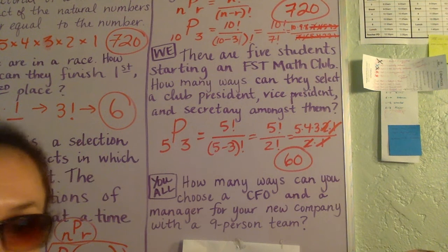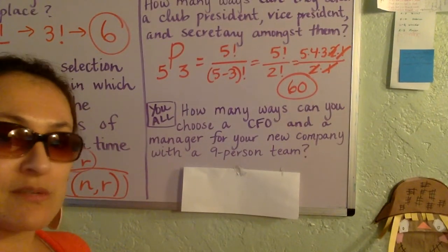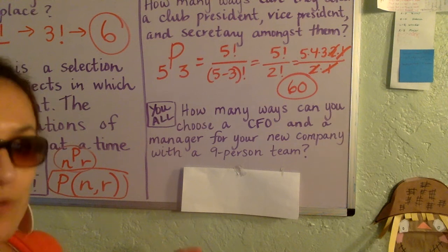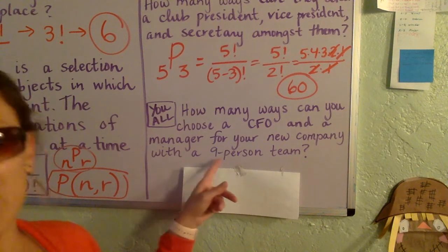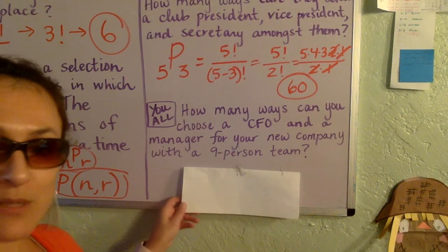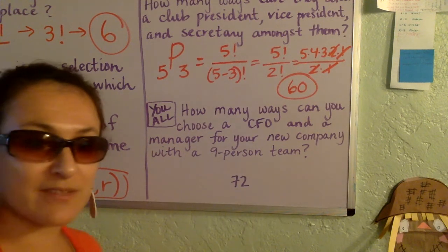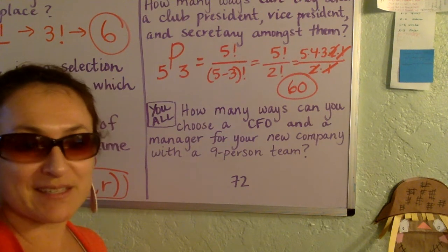Pause it real quick, let's try the y'all. How many ways can you choose a CFO and a manager for your new company, of which you have 9 employees, you have a 9-person team? Pause it, give that a try, and I think you should be getting 72. All right, good luck, get to the practice.